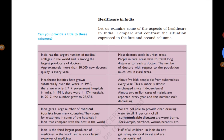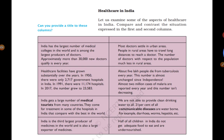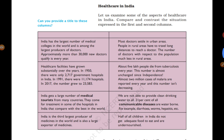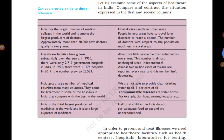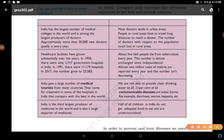Next topic: Health care in India. Let's examine some aspects of healthcare in India by comparing two columns. India has the largest number of medical colleges in the world and is among the largest producers of doctors — approximately more than 30,000 new doctors qualify every year. However, most doctors settle in urban areas, so people in rural areas have to travel long distances to reach a doctor, and the number of doctors relative to the population is much less in rural areas.